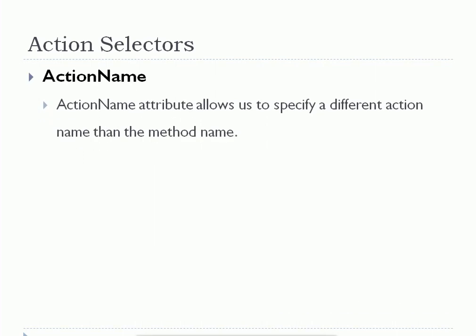The first action selector we are going to study is ActionName. What ActionName does is it allows you to specify a different name for your action method. Whenever we create an MVC application, the first step is to add a controller, and the next step is to write an action method, because all requests and responses are handled by the controller's action method. While defining an action method we specify a name for it, but for some reason we may want to allow the user to call that action method by a different name.